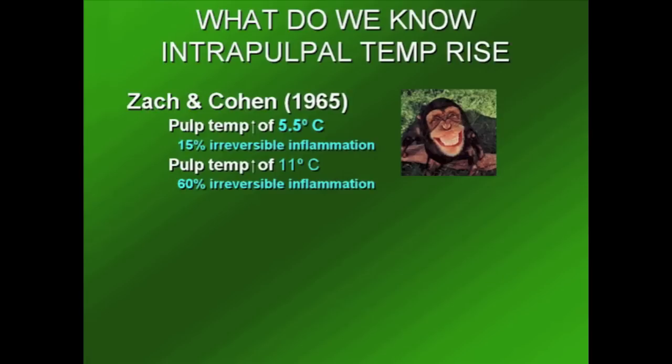The often cited value of a pulpal temperature increase of 5.5 degrees centigrade is used as a potential danger point, where at or above this temperature level there appears to be a significantly higher greater potential for developing pulpal necrosis.